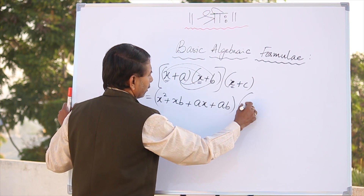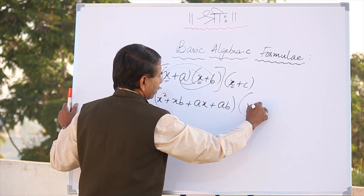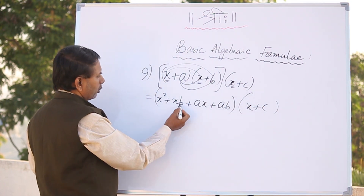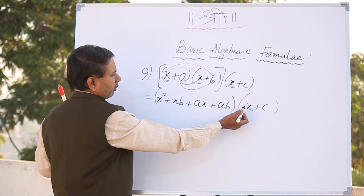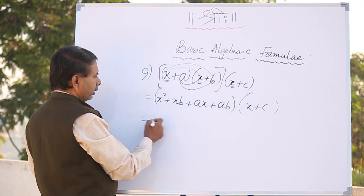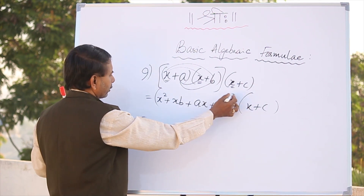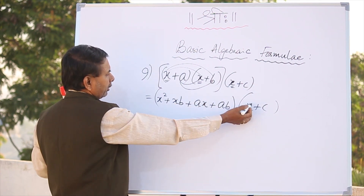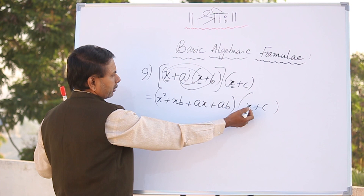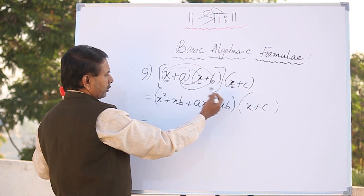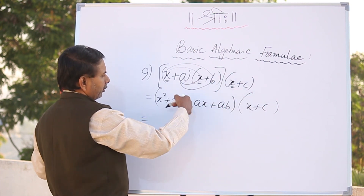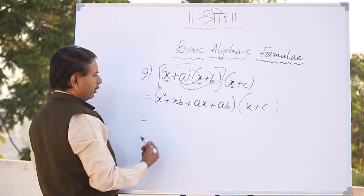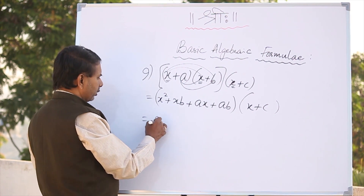That into x plus c. Come on tell me — 1, 2, 3, 4 — 1, 2, 4 into 2 is 8. x into x square, x into x b, x into a x, x into a b. Then c into x square, c into x b, c into a x, c into a b. Come on tell me what is the answer?